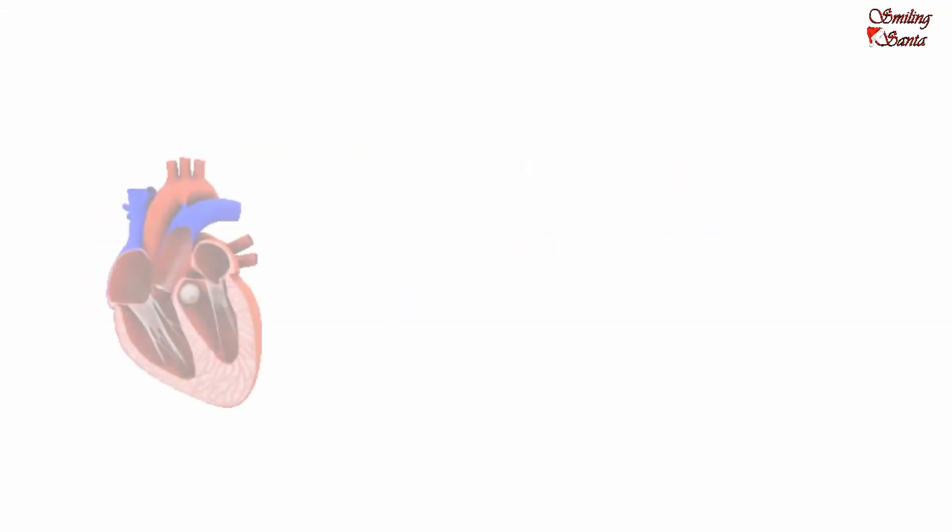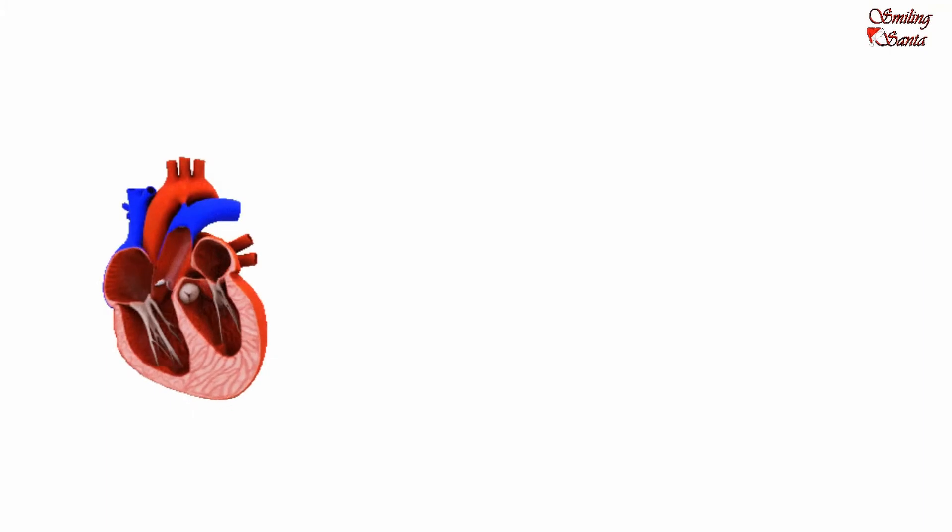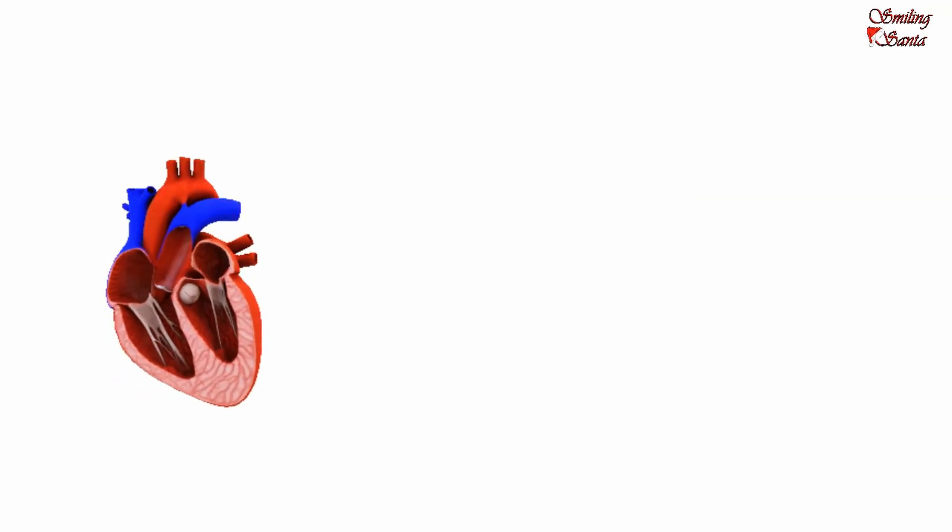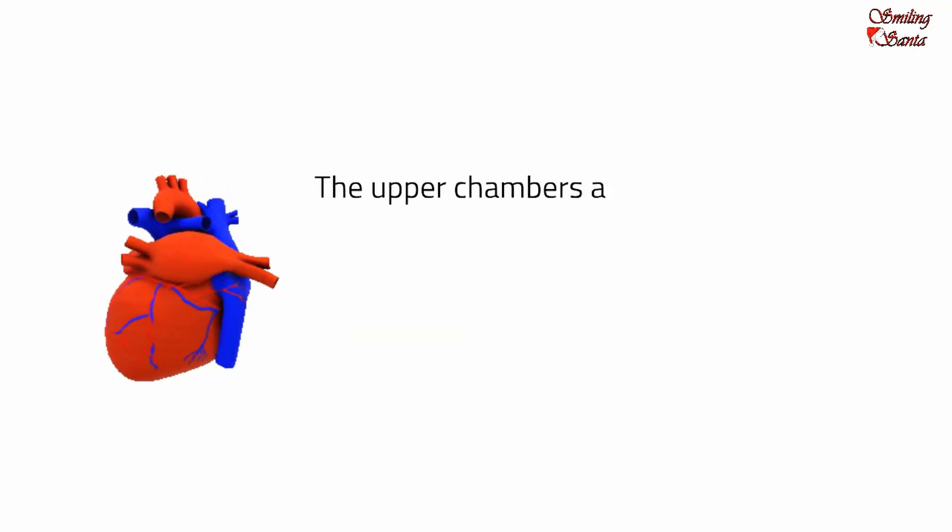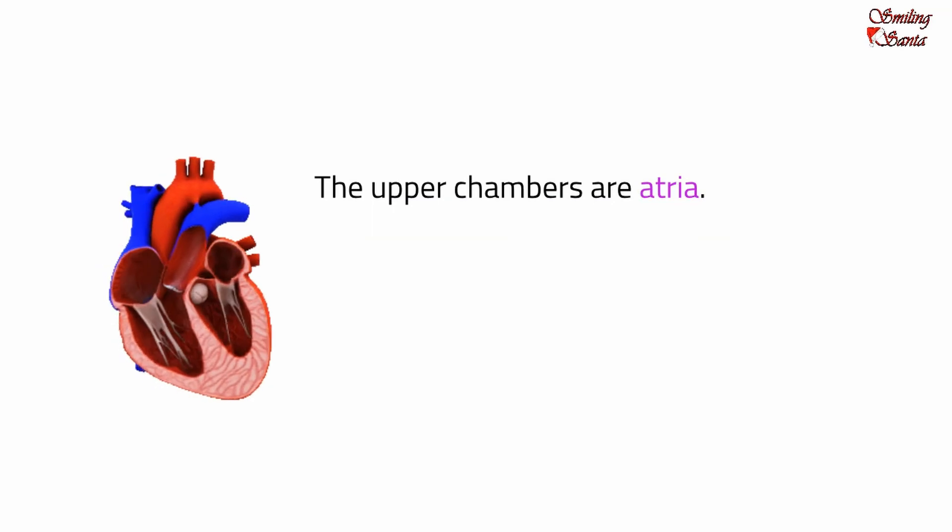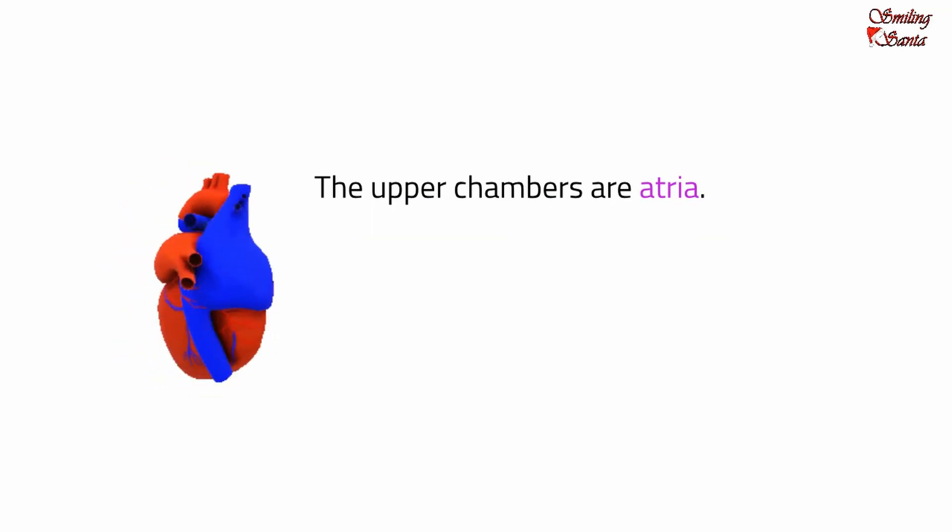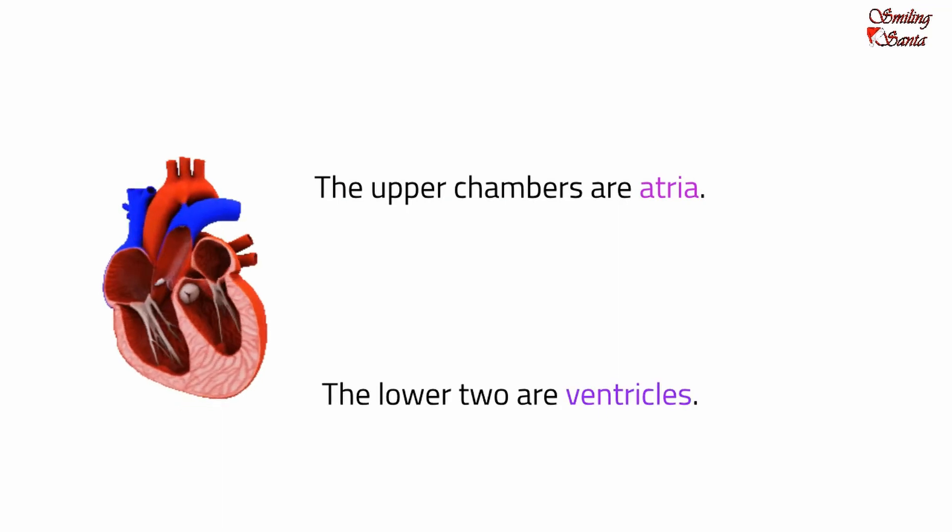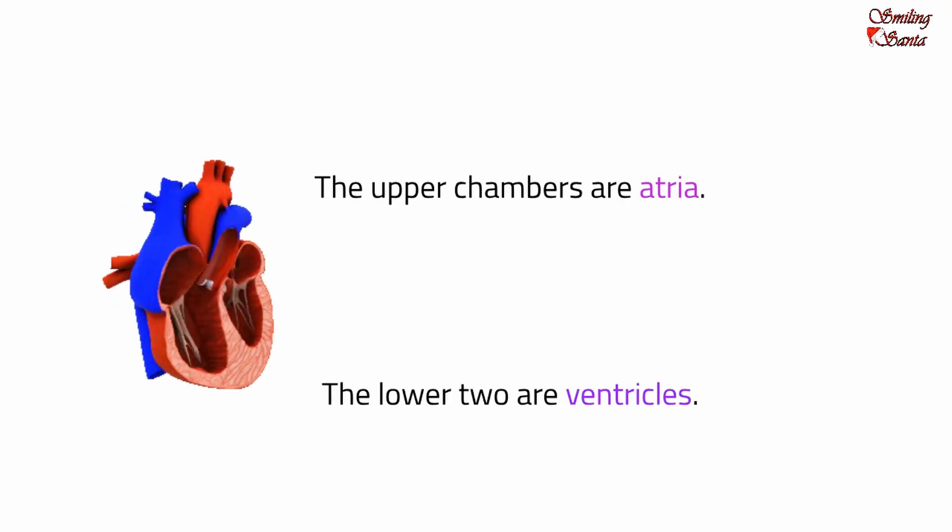The heart is divided by a muscular wall, the septum, into right and left halves. And each half is again divided into two chambers. The upper chambers are atria. Each of them is called an atrium. The lower two are ventricles, individually known as a ventricle.